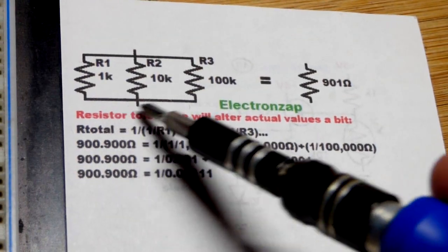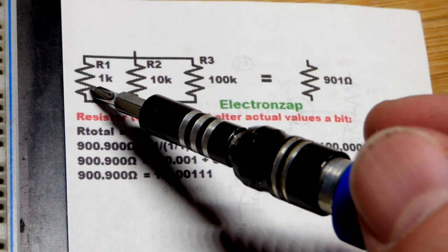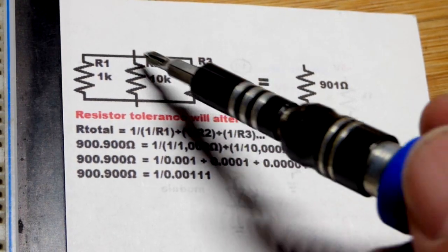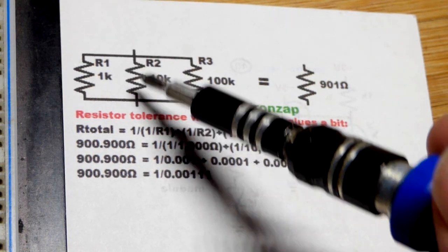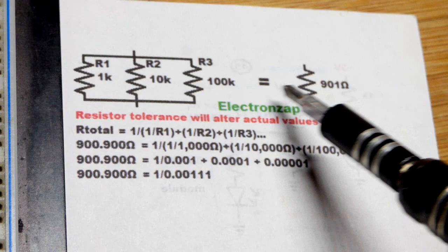So now in this video, we're going to look at parallel resistors again. For the example for this video, we're going to use a 1,000 ohm, 10,000 ohm, and 100,000 ohm resistors connected in parallel. That means opposite ends are all connected together.